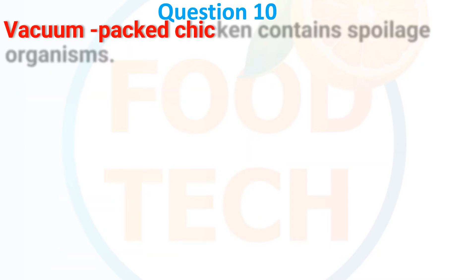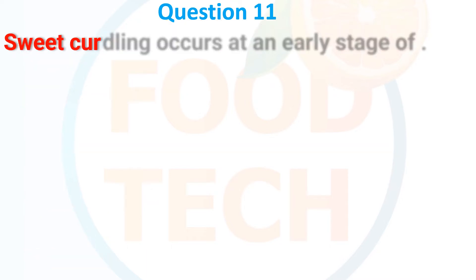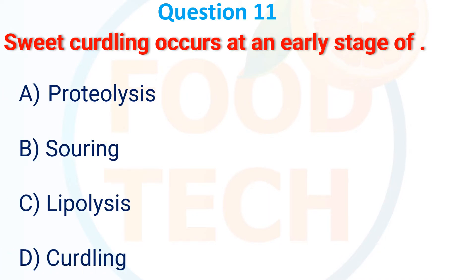Vacuum packaged chicken contains spoilage organisms: A, Enterobacter; B, Pseudomonas; C, Clostridium; D, Bacillus. The answer is A, Enterobacter. Sweet curdling occurs at an early stage of: A, proteolysis; B, souring; C, lipolysis; D, curdling.